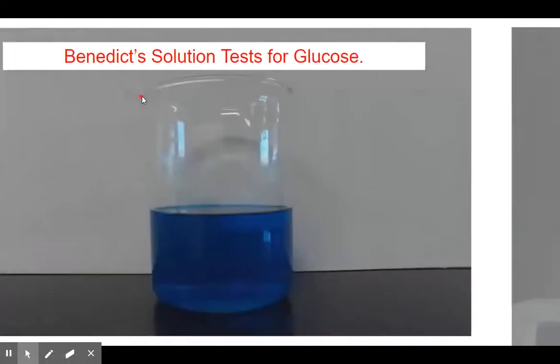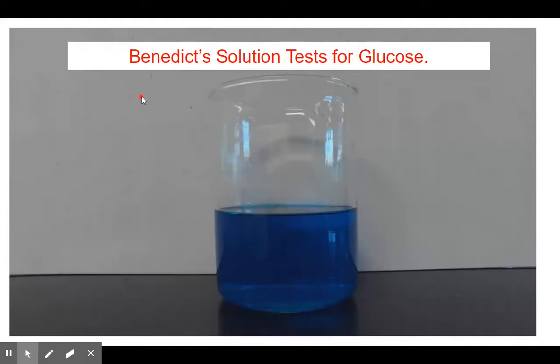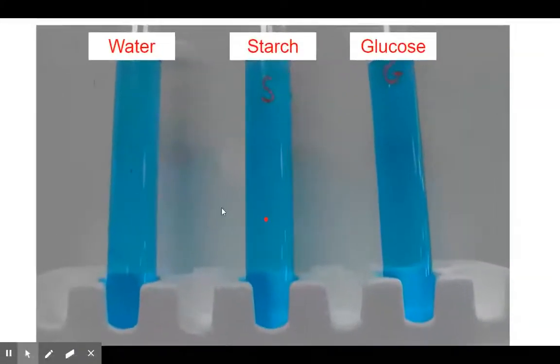The first thing we want to do is use Benedict's solution. Benedict's solution is a solution that tests for glucose when you heat it up. Right now you can see it's a blue color. In the presence of glucose, after you heat it up, and only in the presence of glucose, it's going to turn a red color. So we want to add Benedict's solution to water, starch, and glucose just to see how it works.